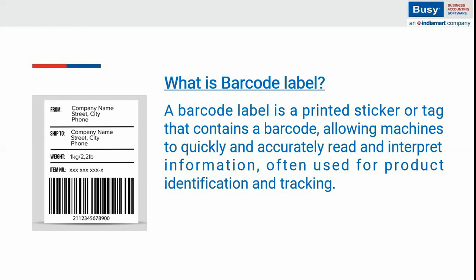The barcode label helps identify your product information in transactions. Nowadays, many types of barcode labels are available in various sizes — A4 size and roll paper (also called cut sheet). One top brand, NOVAJET, provides roll paper barcode labels. You can also find A4 size barcode labels. Based on your requirement you can purchase the appropriate label, and Busy supports all types of label sizes.